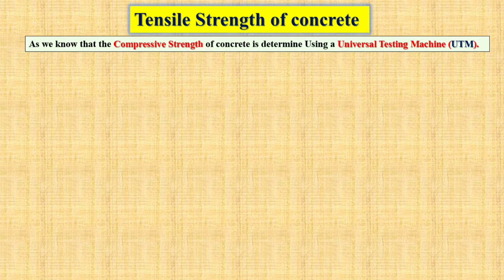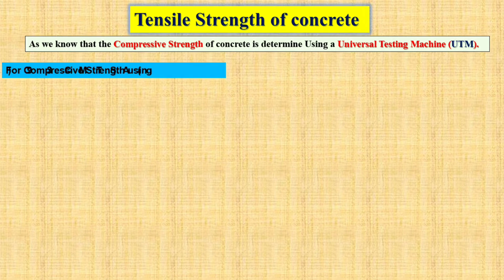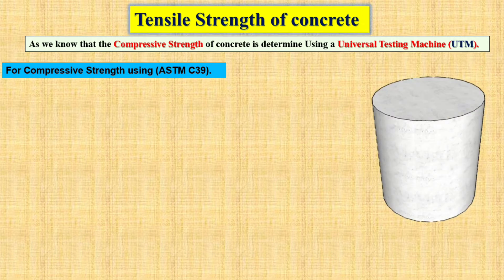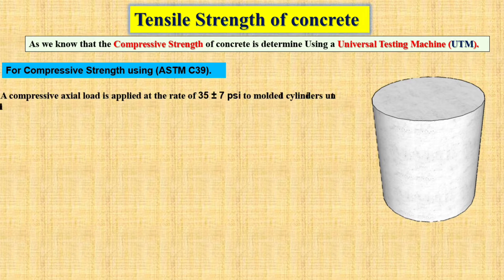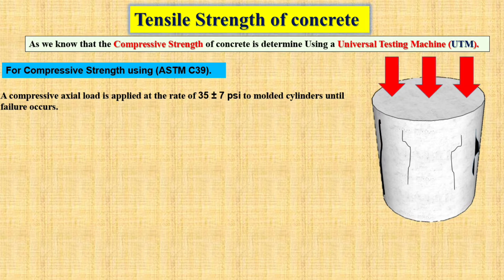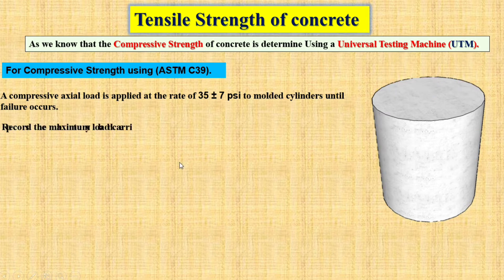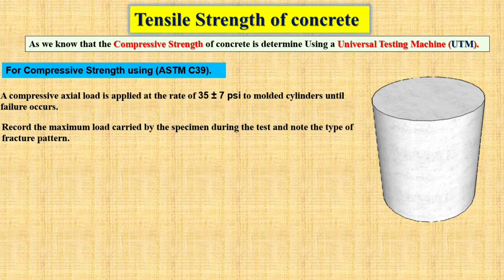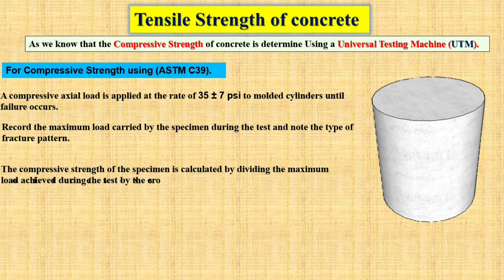For the compressive strength of the concrete we use the ASTM C39 specification. Under this specification we prepare a cylinder mold and apply the load at the rate of 35 ± 7 psi to the molded cylinder until failure occurs. As you can see from this picture, the load is applied to the molded cylinder, failure occurs, and we record the maximum load carried by the specimen during the test and note the type of structural failure pattern.